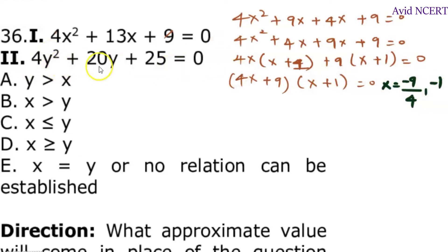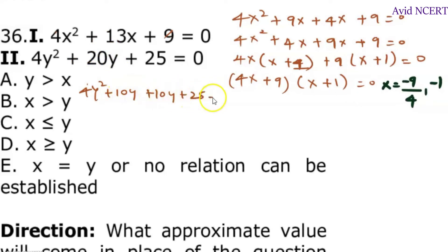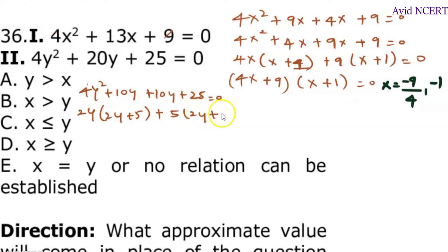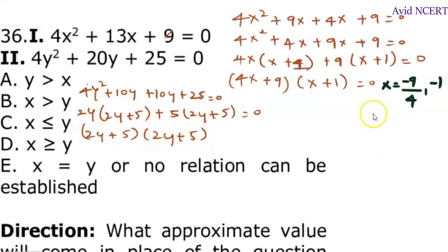For the second equation, 4y square plus 20y plus 25 equals 0. Here, 25 times 4 is 100, and 10 times 10 is 100, so 10 plus 10 is 20. This can be written as 4y square plus 10y plus 10y plus 25 equals 0. Taking the common term out: 2y times 2y plus 5, plus 5 times 2y plus 5 equals 0. So, 2y plus 5 and 2y plus 5 equals 0, which means y equals minus 5 by 2 or minus 5 by 2.